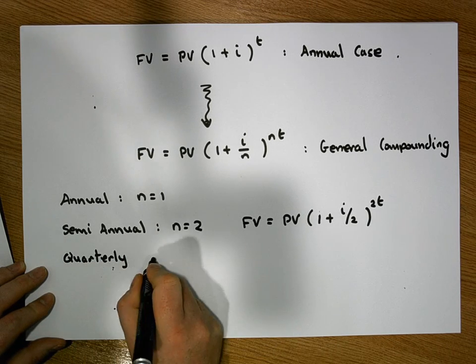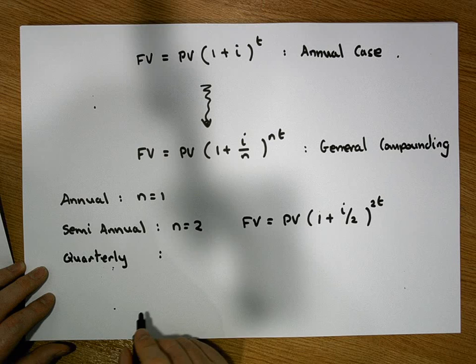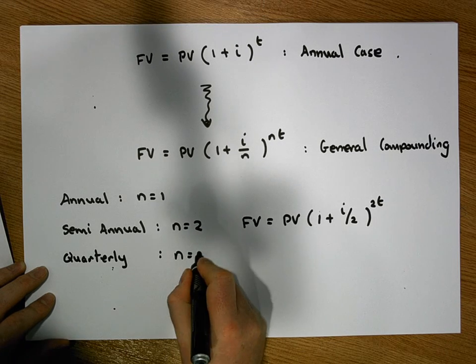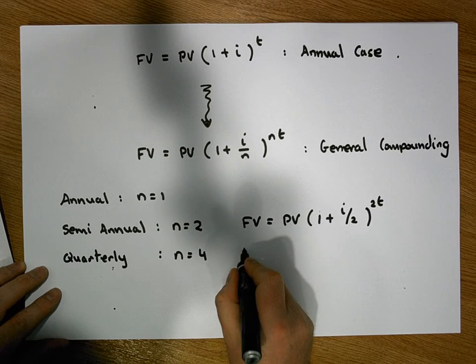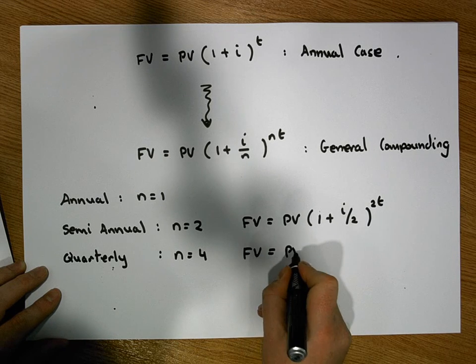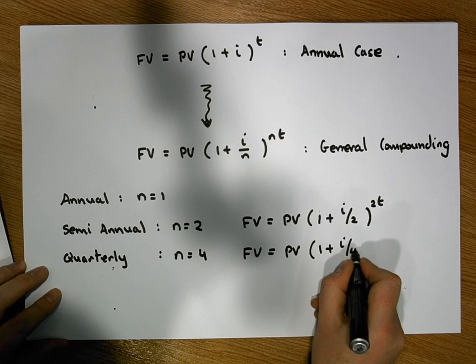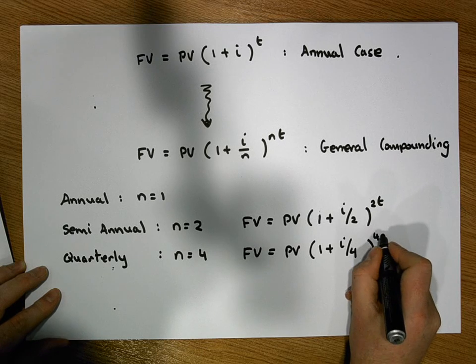So this formula would be, the future value is equal to the principal value times 1 plus I over 4 raised to the power of 4 times T.